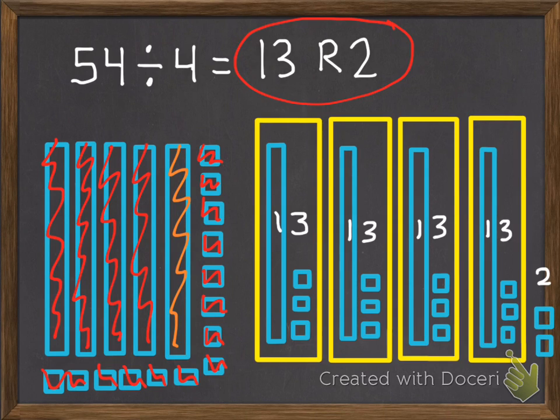Something to remember: our remainder is always going to be less than the number of groups we have. So we have 4 groups, so we call that our divisor. So if we ever had 5 left over with a divisor of 4, that means we could really give each person or each group 1 more. So you always want to check your remainder with that divisor to make sure that it's less. And 2 is less than 4, so we're good.